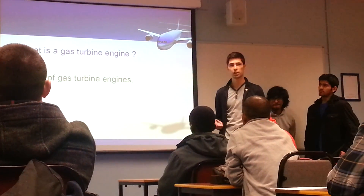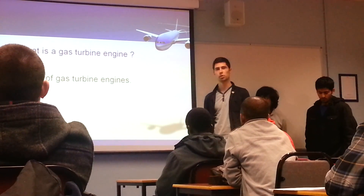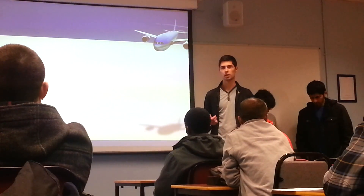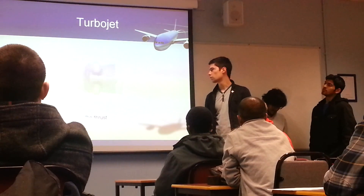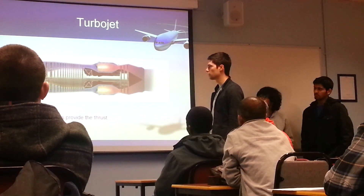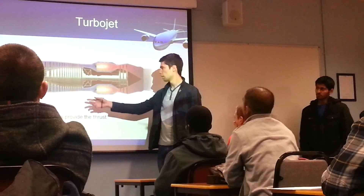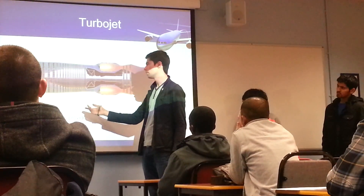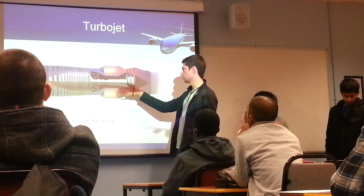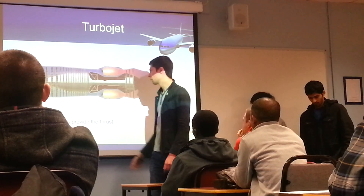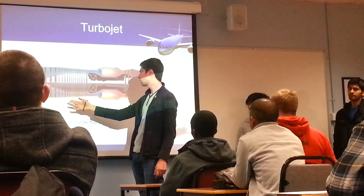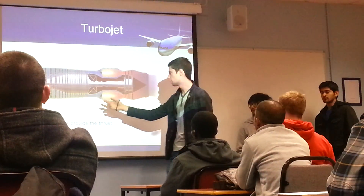The first type is the turbojet. It consists of three main elements. The compressor's main task is to compress and heat the air before it enters the combustion chamber. There are three compressors: low pressure, intermediate pressure, and high pressure compressor.